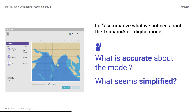Let's summarize what we noticed about the Tsunami Alert digital model. What is accurate about the model? What seems simplified? You might respond: locations of land where earthquakes occur and magnitudes of earthquakes are accurate, but the location of earthquakes isn't always exactly the same. The ocean has many different depths of water, not just shallow and deep. It doesn't show all islands. All tsunamis move across the ocean at the same speed, and there might be other sensor types to use that aren't included.